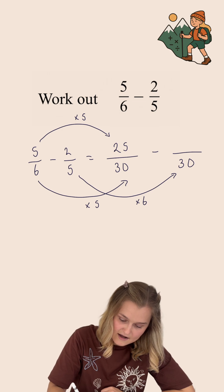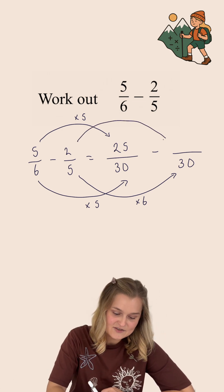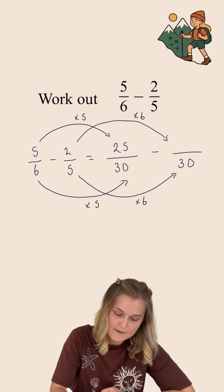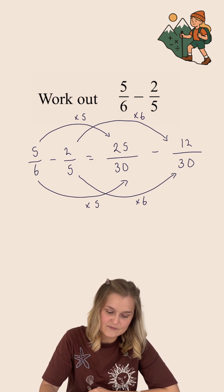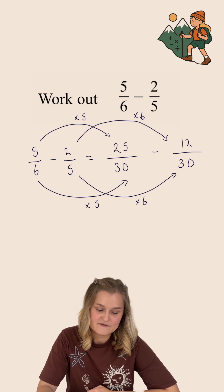to get from 5 to 30, I have multiplied by 6. And so I'm going to multiply the numerator by 6 as well. 2 multiplied by 6 gives us 12. So I'm now working out 25 over 30 subtract 12 over 30.